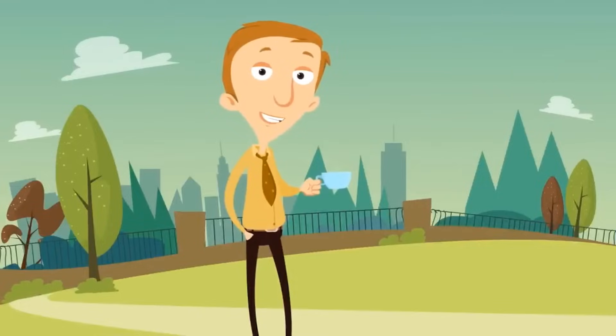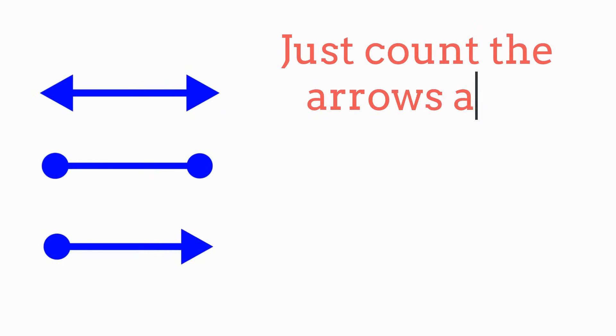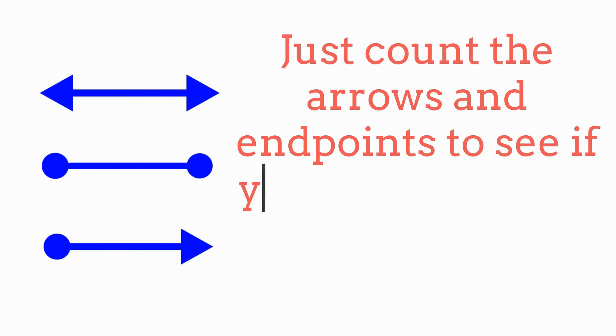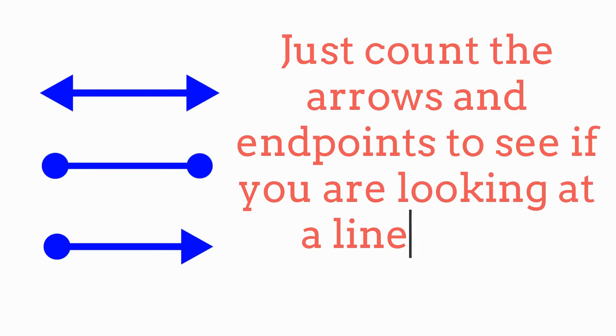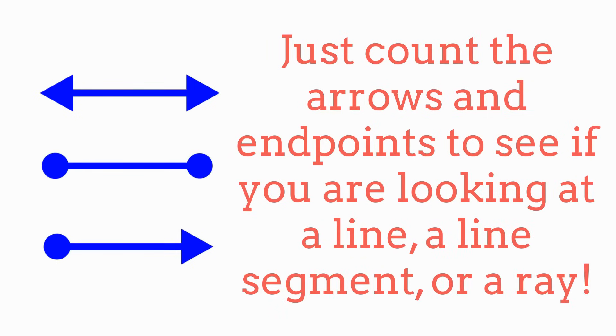We count the arrows and endpoints to discover what we're looking at. That's pretty simple. Just count the arrows and endpoints to see if you are looking at a line, a line segment, or a ray.